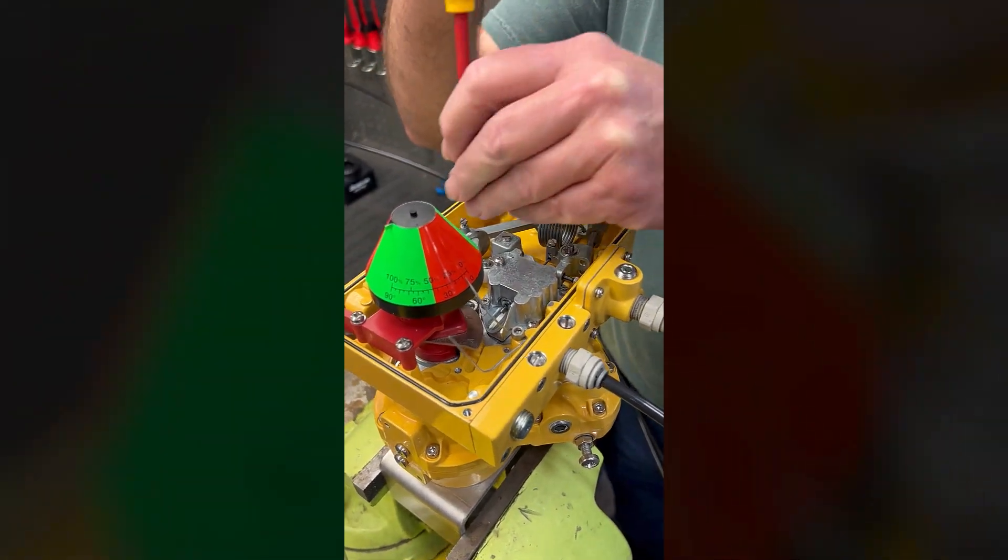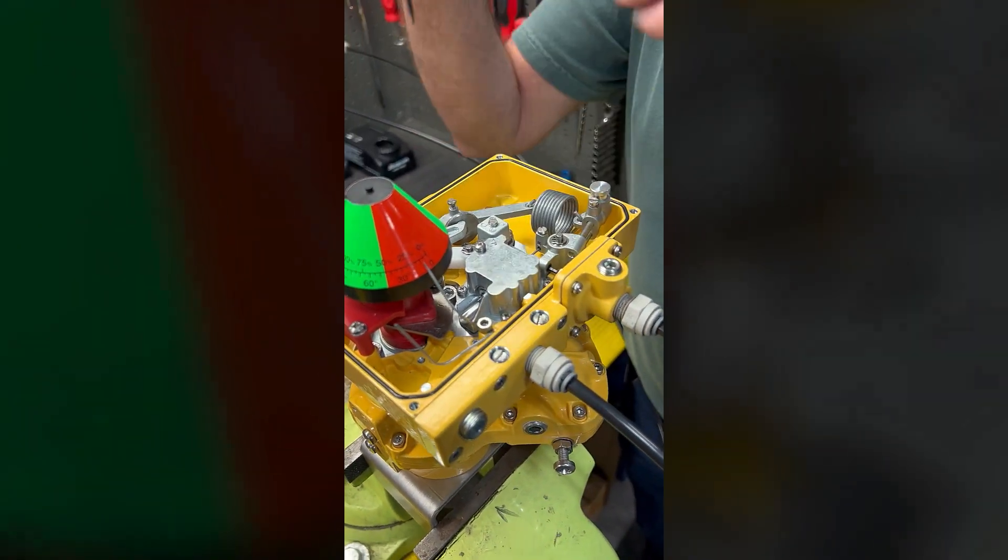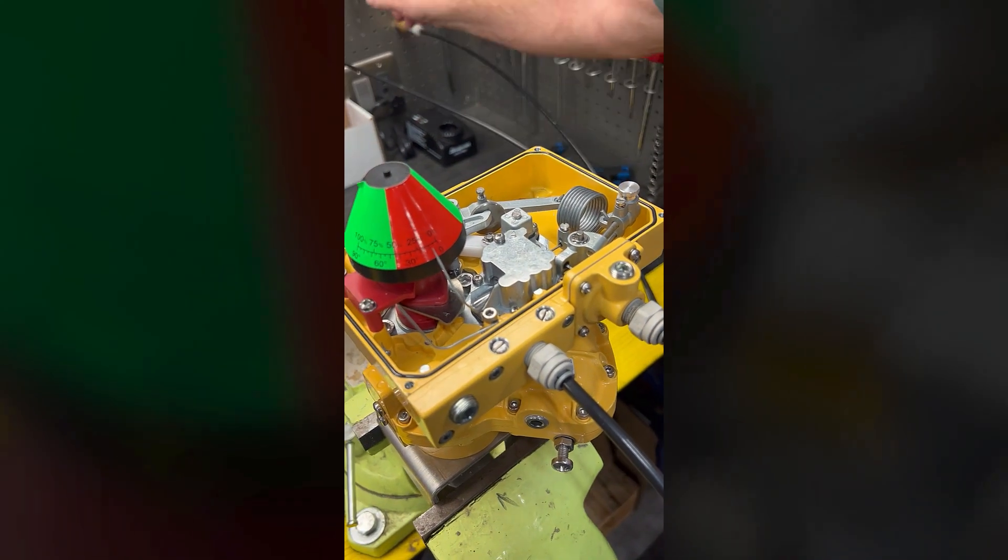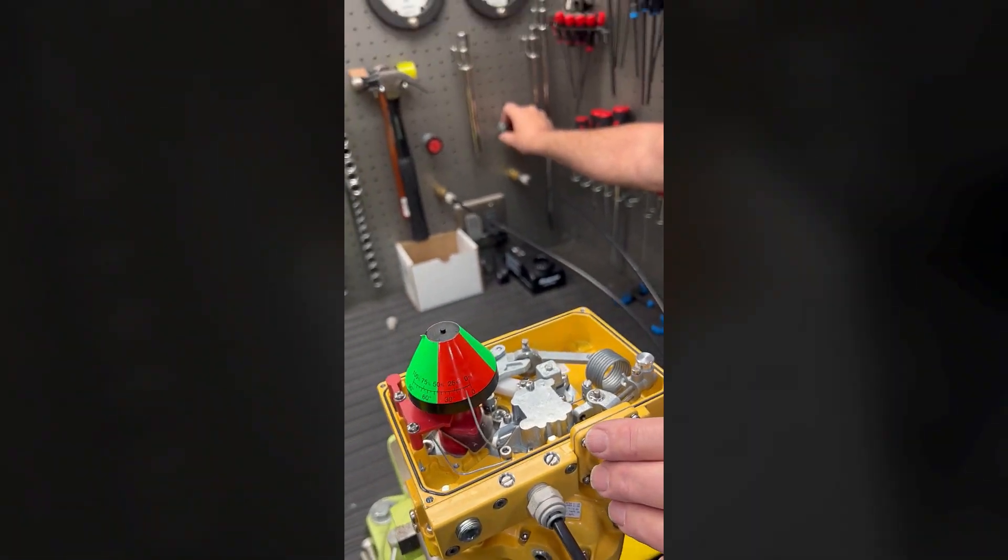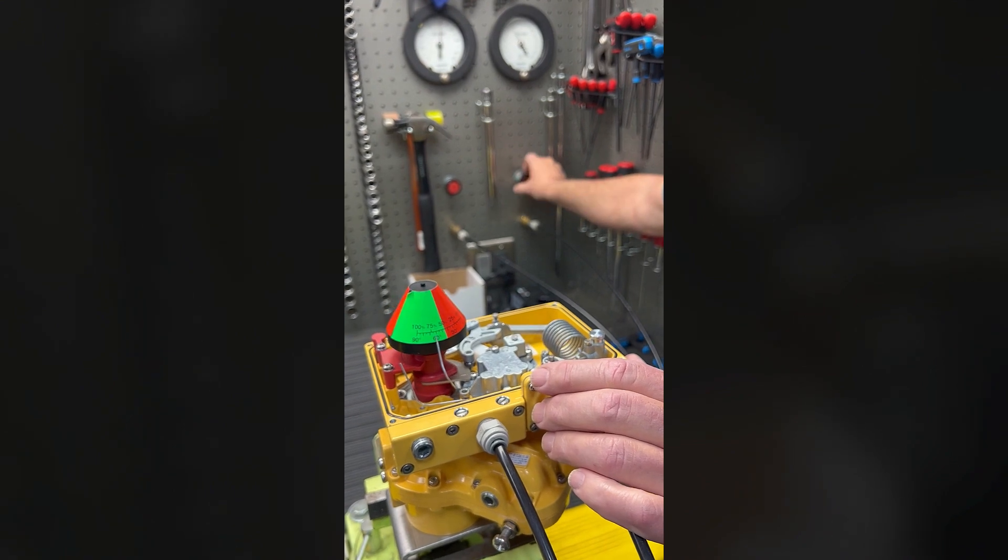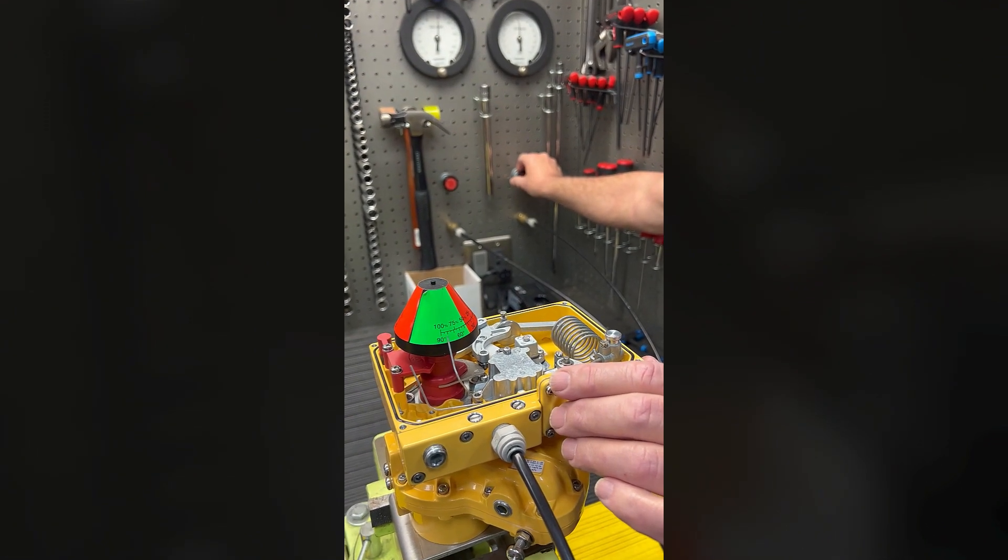First off, what we want to do is loosen our clamp screws and then start with our signal and go up to 15 PSI.